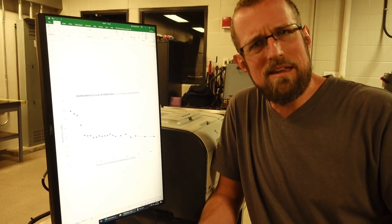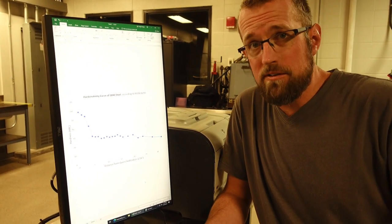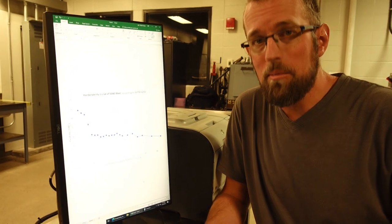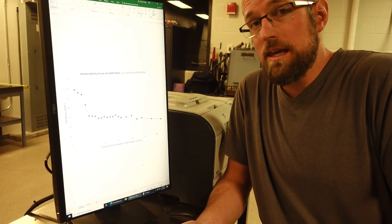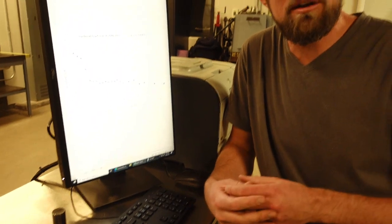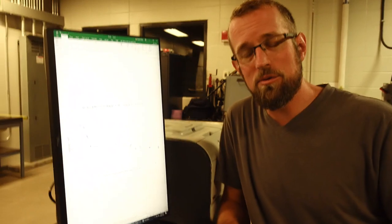Hardenability is kind of a measure of how easy something forms martensite. And 1040 steel forms martensite when cooled quickly, but if you cool it a little more slowly, it doesn't form martensite that easily. So maybe this material will be relatively easy to weld. Maybe I could weld it without too much preheat or other work to slow the cooling rate down.